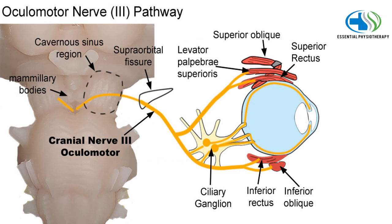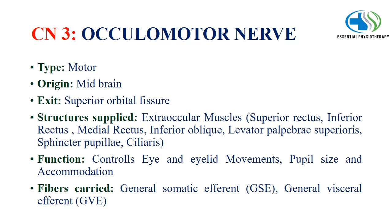The third cranial nerve is the oculomotor nerve. It is a motor type nerve which has its origin from the midbrain and it exits through the superior orbital fissure. The structures supplied are the extraocular muscles: superior rectus, inferior rectus, medial rectus, inferior oblique, levator palpebrae superioris, sphincter pupillae and ciliaris. The function is to control eye and eyelid movements, pupil size and accommodation of the eye.